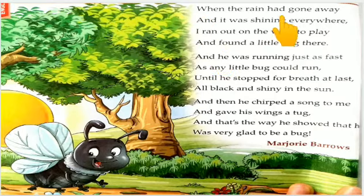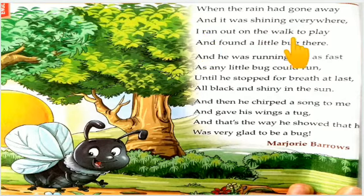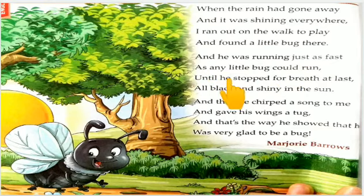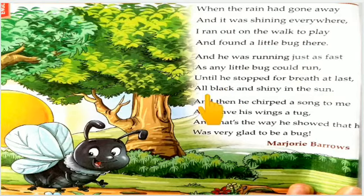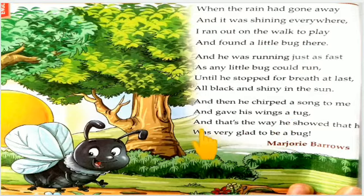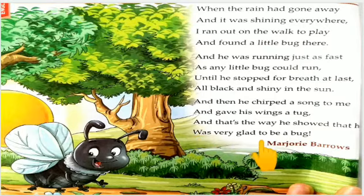When the rain had gone away and it was shining everywhere, I ran out on the walk to play and found a little bug there. And he was running just as fast as any little bug could run until he stopped for a breath at last. And then he chirped a song to me and gave his wings a tug. And that's the way he showed that he was very glad to be a bug.